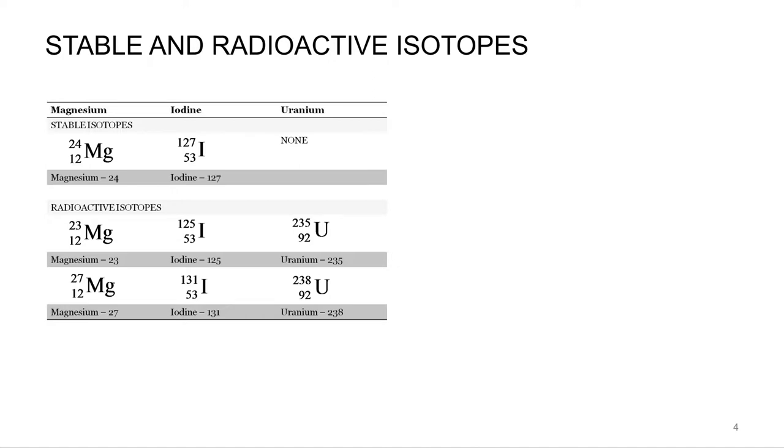It turns out past bismuth, bismuth-83 on, all of the elements, or all of the isotopes of those elements are radioactive. So there's no stable isotopes past bismuth.